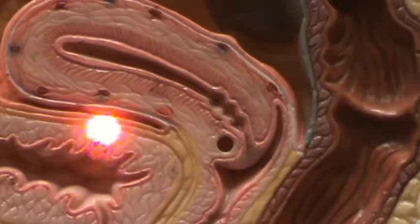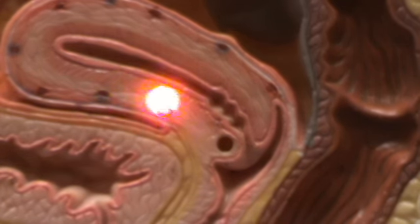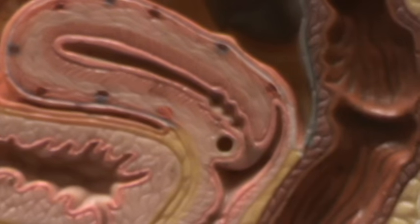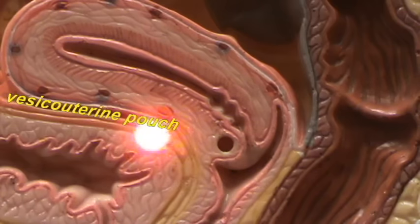Right over here, between the urinary bladder and the uterus, you have this pouch. This pouch is referred to as the vesico-uterine pouch.